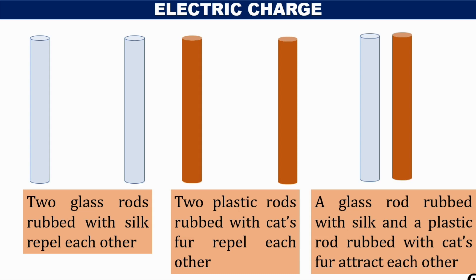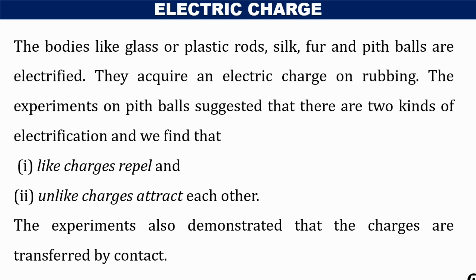Let us try to understand the reason behind the force of repulsion between two glass rods or two plastic rods, and the force of attraction between a glass rod and a plastic rod. Bodies like glass or plastic rods, silk, fur, and pith balls are electrified — they acquire an electric charge on rubbing. Due to friction, they acquire electric charge: the glass rod acquires one kind of charge and the silk cloth acquires another kind. The experiment suggested that there are two kinds of electrification. Like charges repel and unlike charges attract each other.